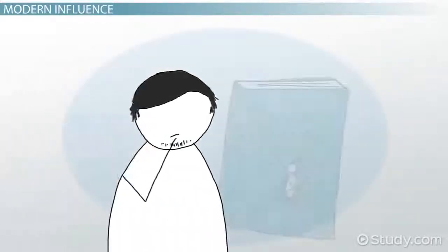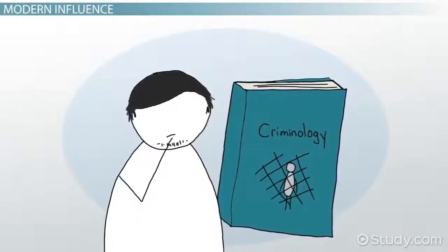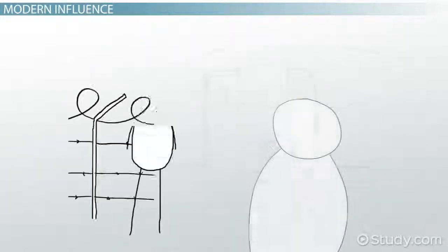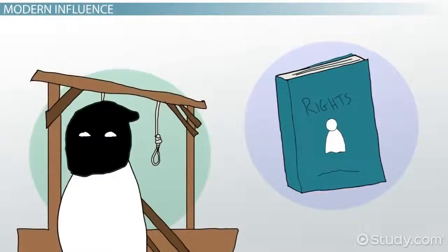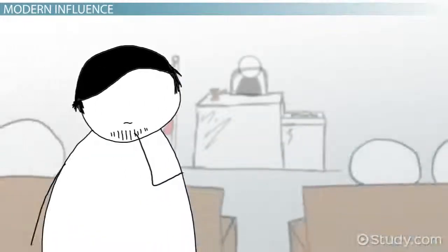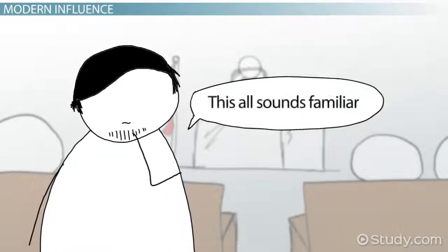The five principles of the Classical School of Criminology sound very familiar to Jordan. He's heard people talk about punishment for crimes as a deterrent, and he's heard that it's important to uphold human rights and to avoid cruel and unusual punishment. He's also heard of due process, and of the phrase, innocent until proven guilty.